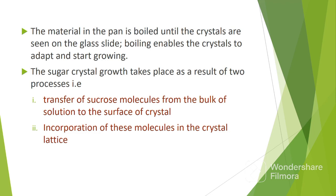After introducing slurry in the pan, the material is boiled until the crystals are seen on the glass slide. Boiling enables the crystals to adapt and start growing. Sugar crystal growth takes place as a result of two processes: transfer of sucrose molecules from the bulk of solution to the surface of crystals, and incorporation of these molecules in the crystal lattice.